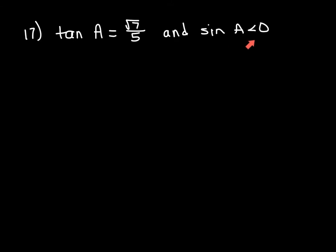We want to draw a triangle, and we have to first decide which quadrant we're working in. Using 'All Students Take Calculus': A means all trig functions are positive in the first quadrant — sine, cosine, and tan are all positive. S means sine is the only trig function positive in the second quadrant; cosine and tan are negative. T means tan is the only one positive in the third quadrant.